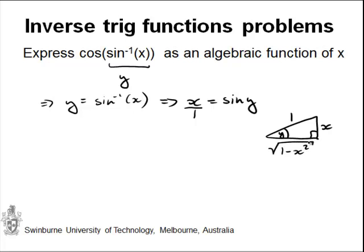This is what we've got from the inverse trigonometric function. Now, what we're really after is cos y. Cos y is something we can read off this triangle as well. Cos y is the adjacent side divided by the hypotenuse, so we get the square root of 1 minus x squared divided by 1, or just the square root of 1 minus x squared.